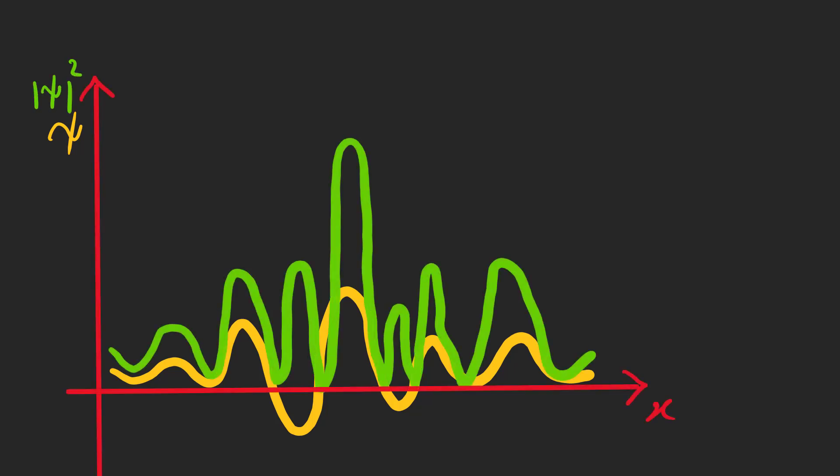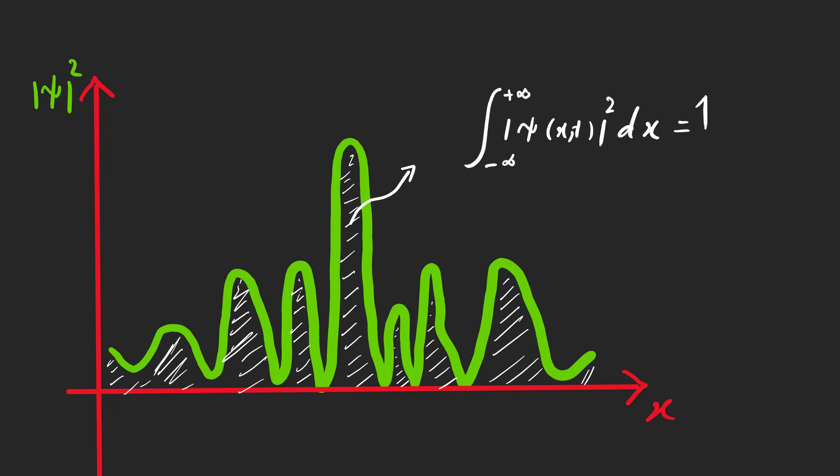The wave function gives us all information we need to talk about the particle. If we plot psi squared against the position, the area under the graph should yield 1, because the particle should be somewhere in the space.